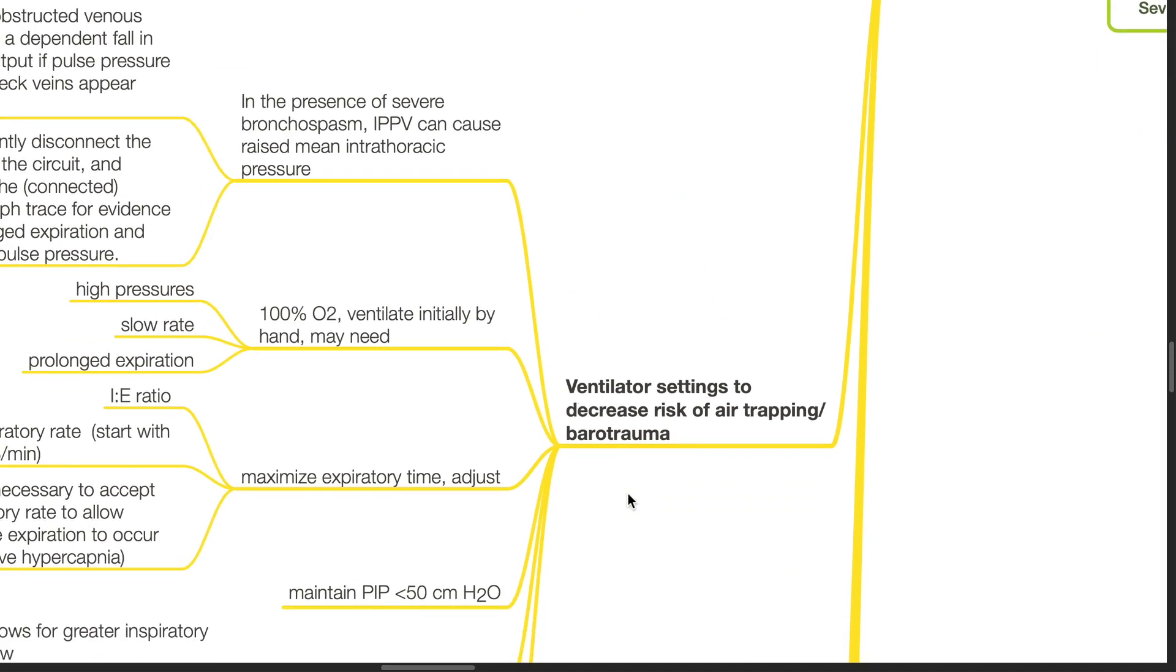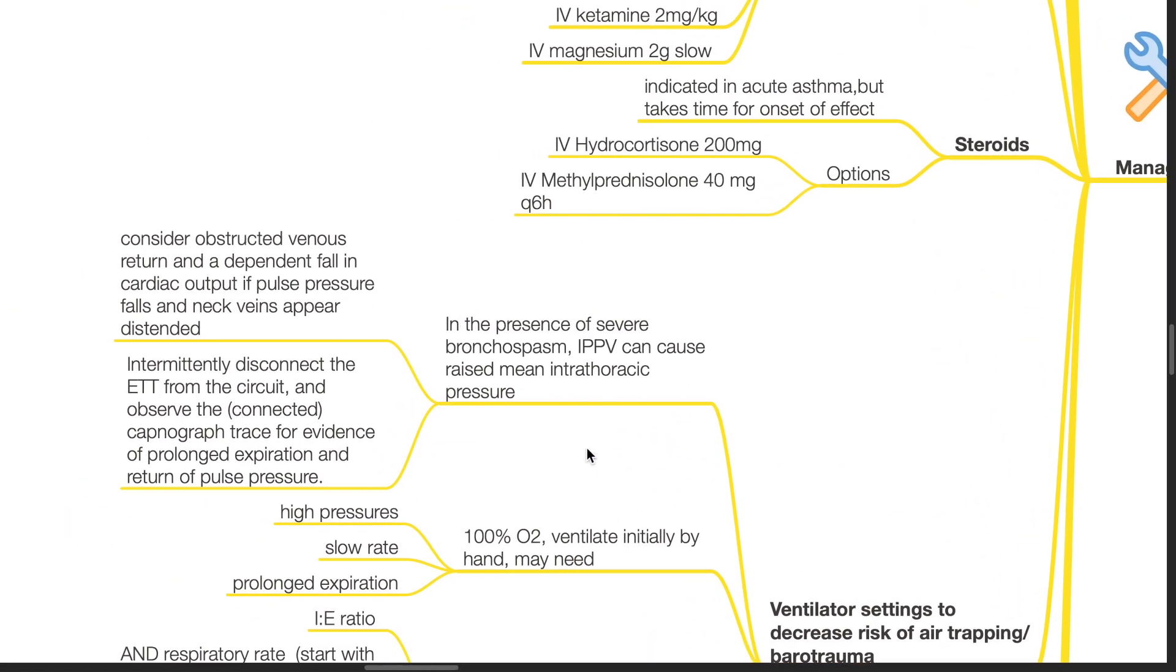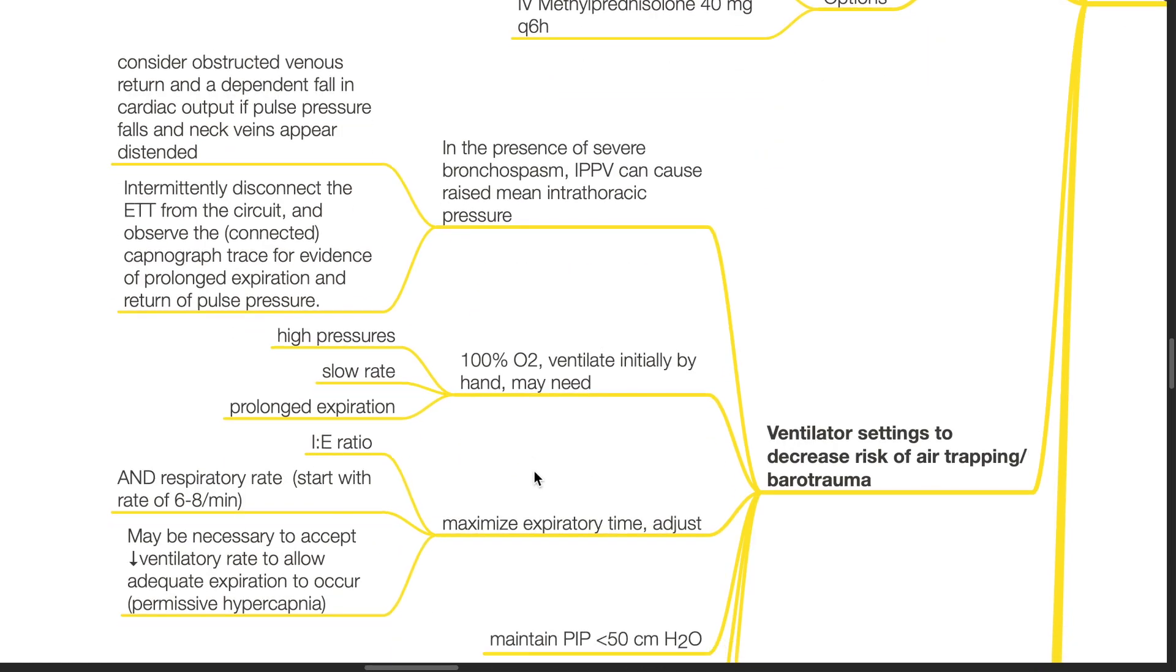Ventilator settings to decrease the risk of air trapping and barotrauma: In the presence of severe bronchospasm, IPPV can cause raised mean intrathoracic pressure. Consider obstructed venous return and a dependent fall in cardiac output if pulse pressure falls and neck veins appear distended. Intermittently disconnect the ETT from the circuit and observe the connected capnograph trace for evidence of prolonged expiration and return of pulse pressure.